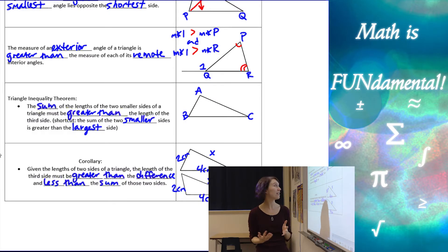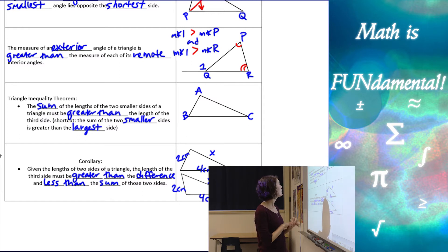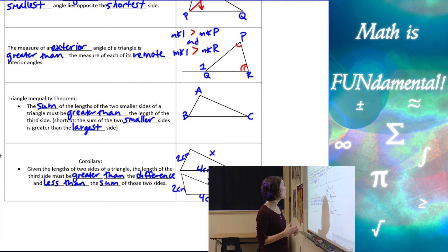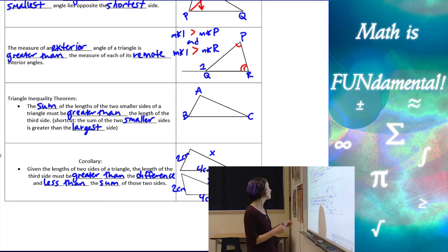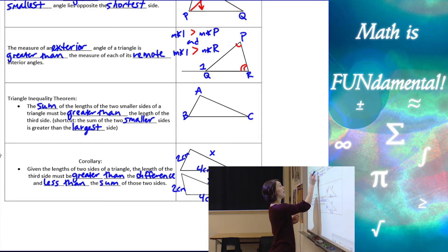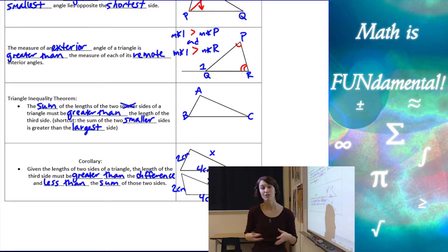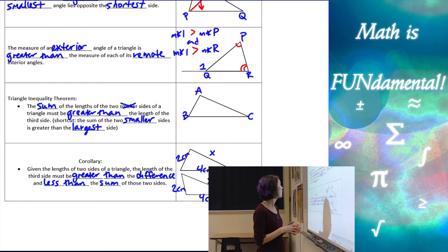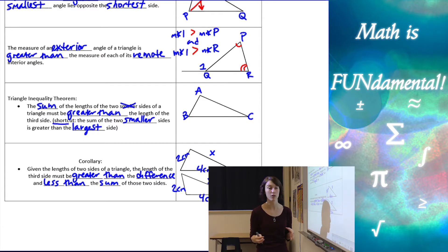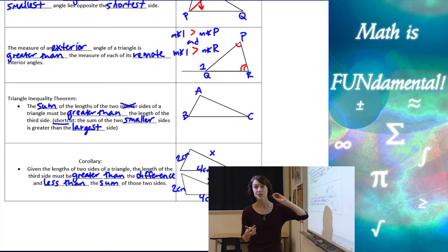Next we have the triangle inequality theorem. This says that the sum of the lengths of any two sides of a triangle has to be greater than the length of the third side. There's a shortcut though — we don't have to do a whole bunch of work. We just need to add the two smaller sides together and make sure they're greater than the largest side.